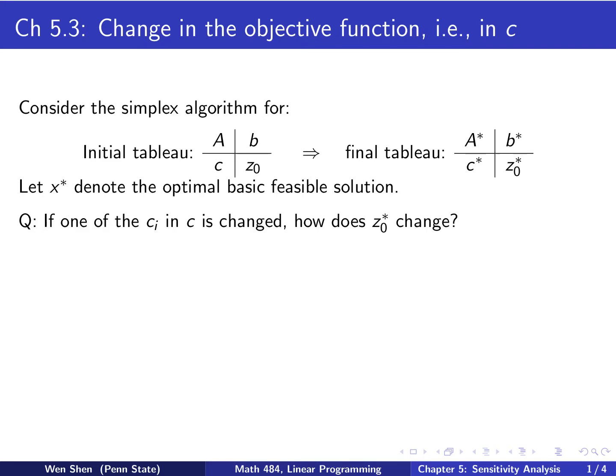How does the final optimal value z naught star change? Let's try to answer this in this abstract setting. From what we discussed in the previous chapter, we know that c star, the final value of this c here, can be expressed by this expression: c minus cB, remember how to form that vector, and the A star here. If this is the final tableau, then this vector here, this coefficient here, shall be non-negative.